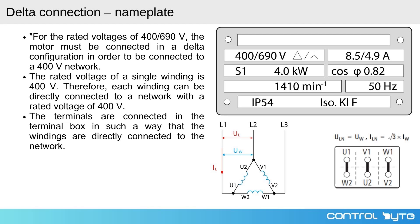This means that each winding experiences the full line voltage, which in this case is 400 volts. In delta, the line voltage UL is equal to the phase voltage Uw. However, unlike in the star connection, the line current IL is higher than the phase current Iw by a factor of the square root of 3.